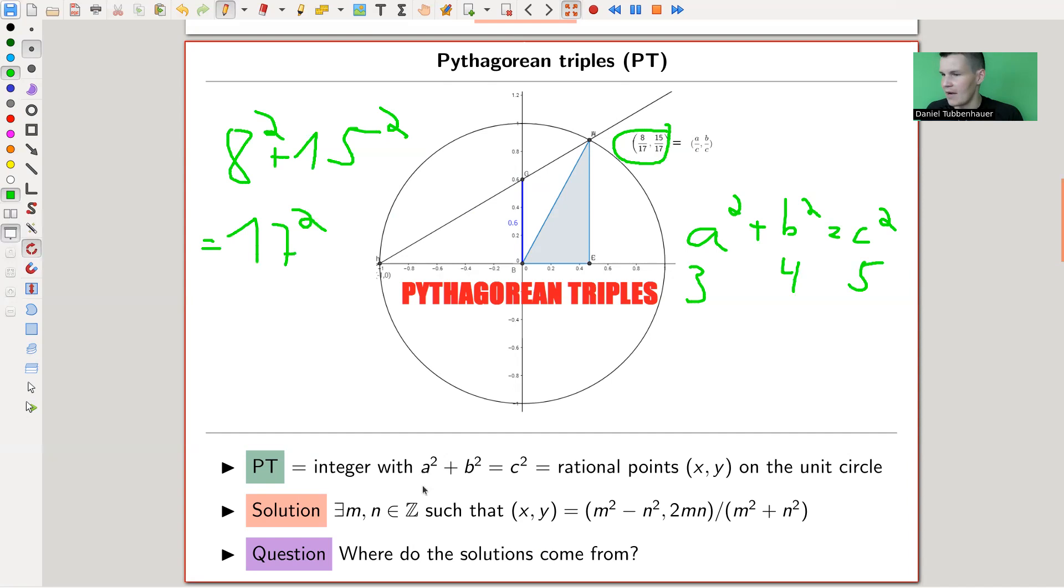And really, just reformulated in a direct way, instead of looking at integers with A squared plus B squared equals C squared, you can look at rational points, essentially just dividing by C, on the unit circle, which really just means x squared plus y squared equals 1. So you just get rid of the C squared, put it on the other side, and then x is something like A divided by C, and y is something like B divided by C.